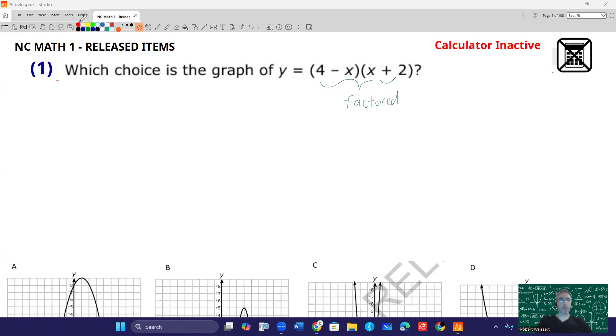To get the zeros, what you're going to do is you're going to look at each of these factors, you're going to set them equal to zero. So if I add the x over I'm going to get 4 equals x and so therefore one of your zeros is going to be 4. The other one, x plus 2 equals zero, and therefore if I subtract 2 from zero I'm going to get x equals negative 2.